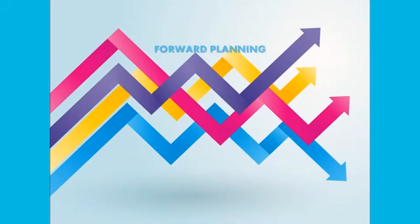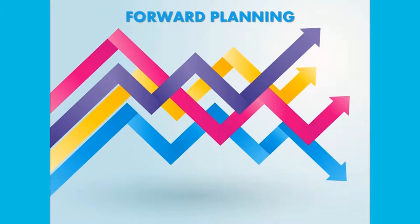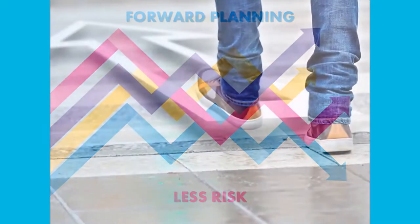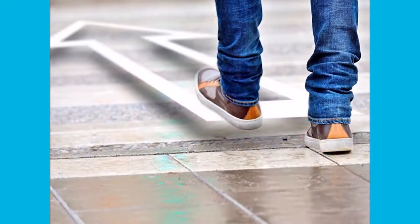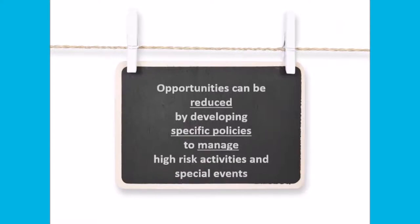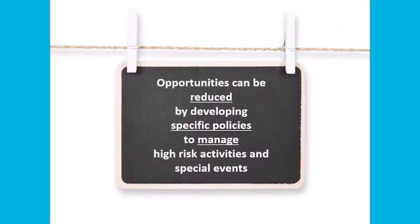So why does your organization need to have plans for high-risk activities and special events? Forward planning to identify risks and implement strategies can assist to reduce the possibility of children being harmed. It is important to recognize that people who seek to deliberately harm children must have or create the opportunity to do so. These opportunities can be reduced by developing specific policies to manage high-risk activities and special events.